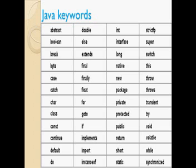Java keywords: we have keywords in Java which we can use in our programming. One important thing is that we cannot initialize a variable using a keyword name. For example, we cannot use 'double' as a class name like 'class double', because double is a keyword and JVM treats it as a keyword, not as a class name we want to give.